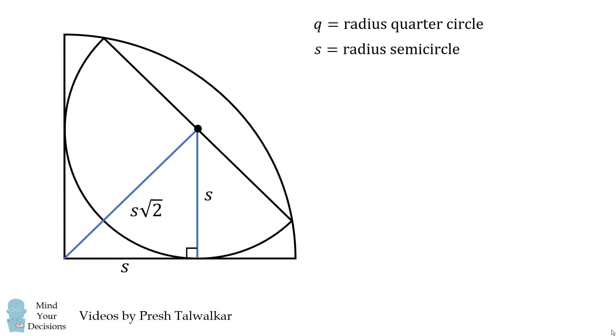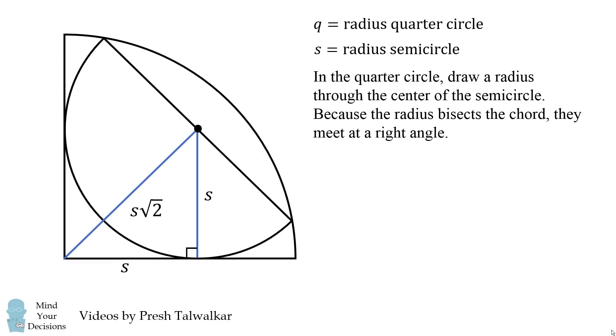Now let's continue connecting important points in this diagram. Let's draw a radius of the quarter circle through the center of the semicircle. Because each of these is a radius of the semicircle, each will be equal to s. Therefore, the radius of this quarter circle bisects the chord, and therefore these meet at a right angle.